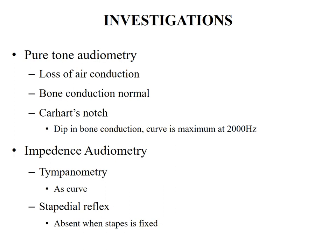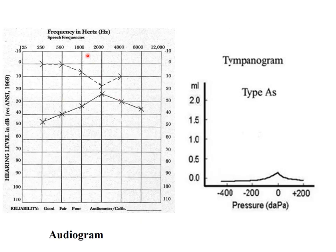Investigations: the main investigation is audiological assessment, including pure tone audiometry and impedance audiometry. Pure tone audiometry shows loss of air conduction especially for lower frequencies; bone conduction is normal. However, in some cases there is a dip in the bone conduction curve known as Carhart's notch, which though specific for otosclerosis is only present in 25 to 30% of cases, with the dip maximum at 2000 Hz. Impedance audiometry combines tympanometry and stapedial reflex — tympanometry shows an AS type curve (S for sclerosis), and the stapedial reflex is absent when the stapes is completely fixed.